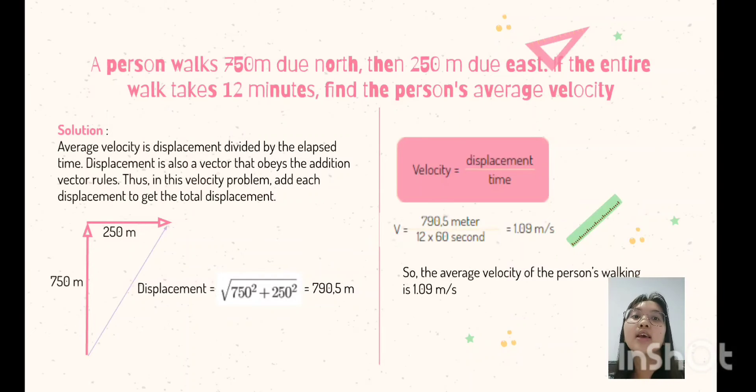And the next question, a person walks 750 meters north, then 250 meters east. If the entire walk takes 12 minutes, find the person's average velocity. The solution is, average velocity is displacement divided by the elapsed time. Displacement is also a vector that obeys the addition vector rules. Thus, in this velocity problem, add each displacement to get the total displacement.